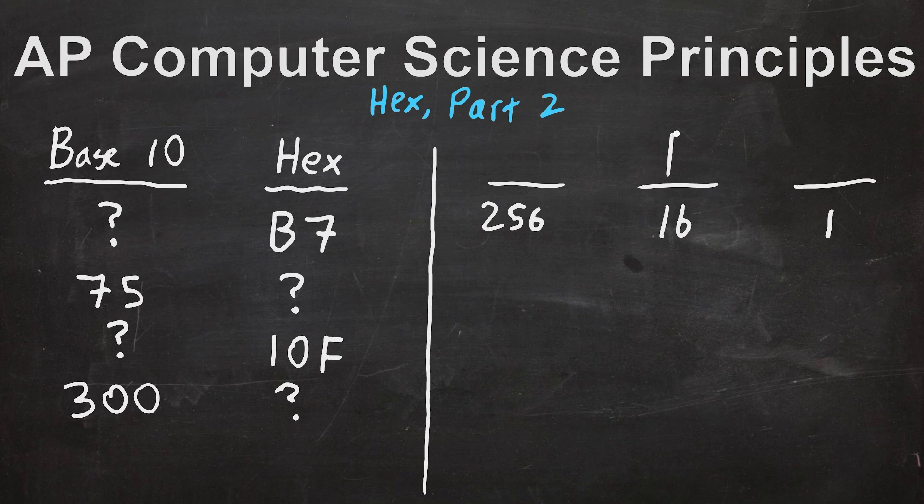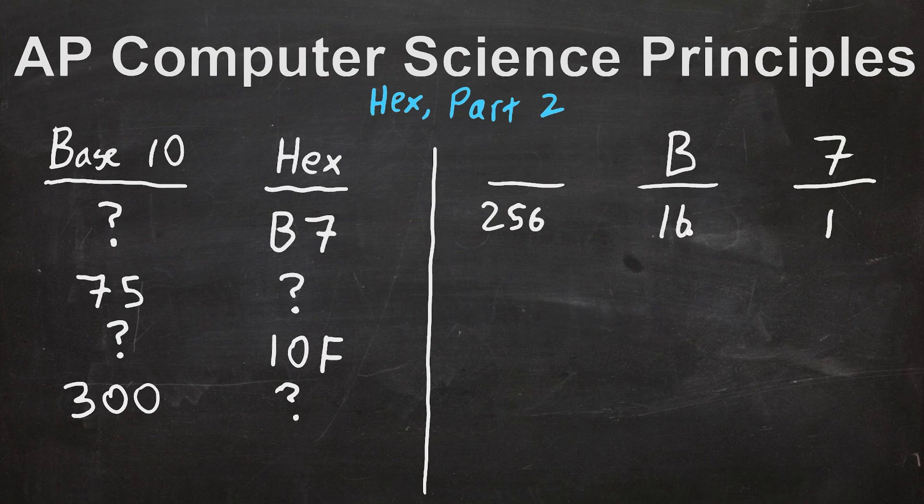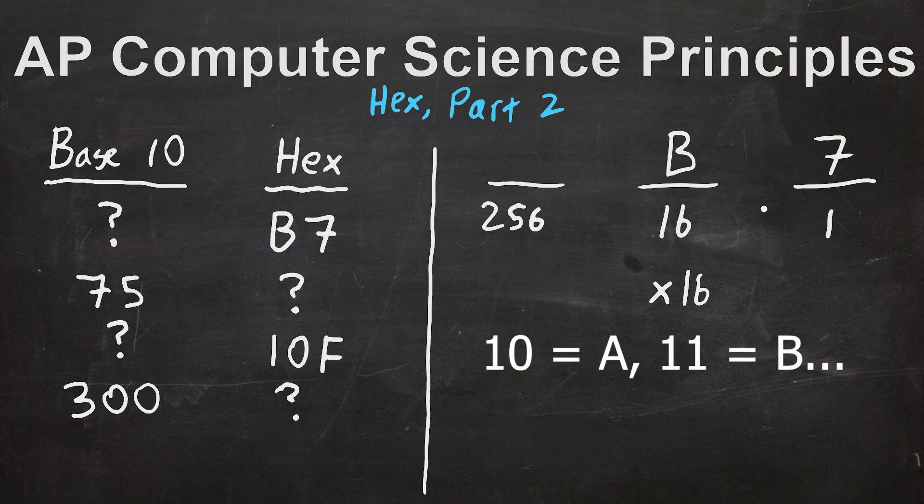Let's go ahead and start with B7. This space that the B is on is worth 16, so whatever that number B is, and yes in this case it is a number, we're going to multiply it by 16. Now let's recall that once you hit 9, the value of 10 is represented by an A, a B represents 11, so there are 11 16s and 7 1s.